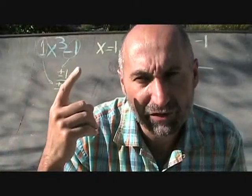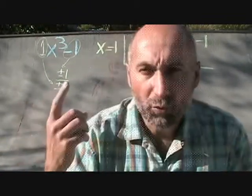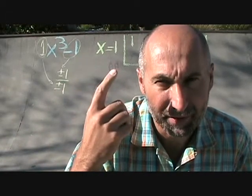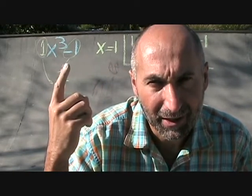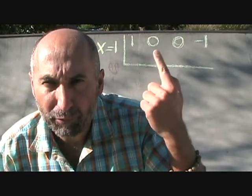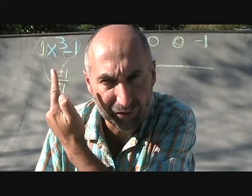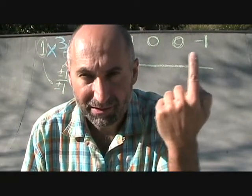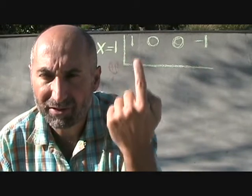The possible factors are plus or minus 1 divided by plus or minus 1, which is just plus or minus 1. So we're going to try x equals 1, meaning x minus 1, and see if it is a factor. We lay out the coefficients as 1, 0, 0, negative 1 — with zeros as place markers for the missing x squared and x terms.